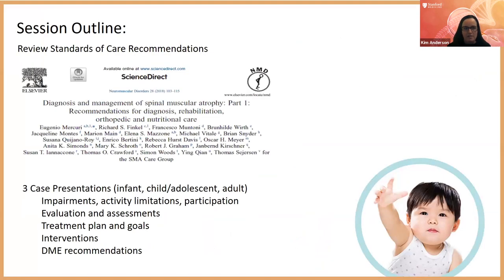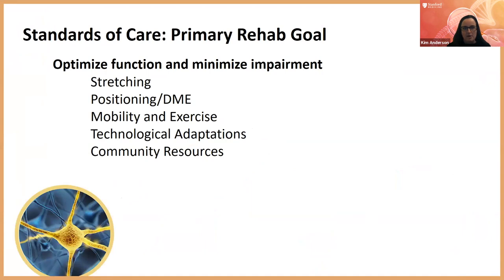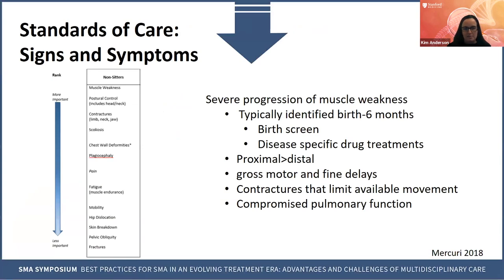Today we'll be reviewing the standards of care recommendations and then also reviewing three case presentations within an infant, a child, adolescent, and adult patient. The primary rehab goal within the standards of care is to optimize function and minimize impairment. The standards of care identify the signs and symptoms of a non-sitter as having severe progression of muscle weakness, but with earlier detection through birth screens and new disease-specific drug treatments, that has started to change.